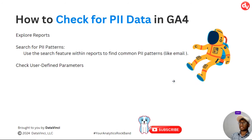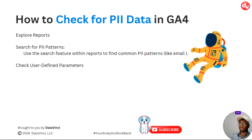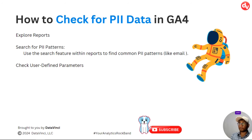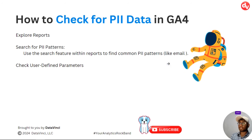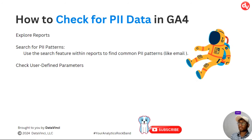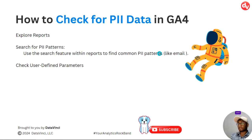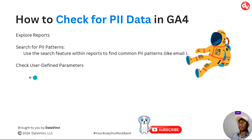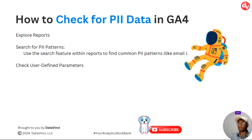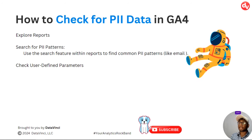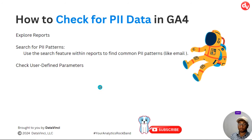There are two ways to check for PII data in GA4. First, you can use standard reports or explore reports and search for PII patterns using the search feature to find common patterns such as email addresses. Second, you can check for user-defined parameters or custom dimensions that might be collecting PII. Let's jump into GA4 to see how that is done.